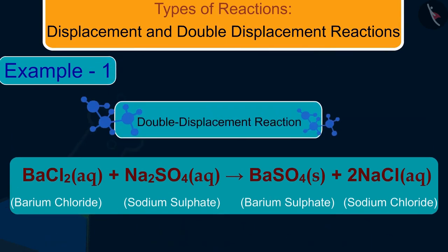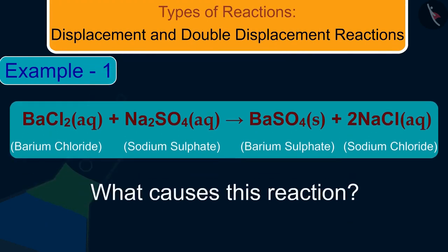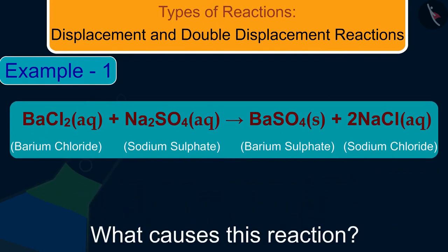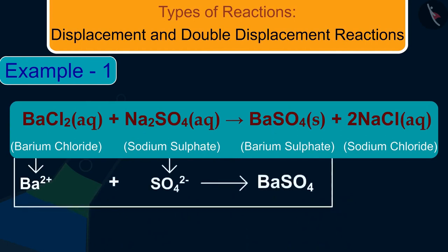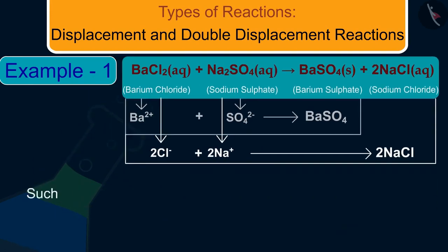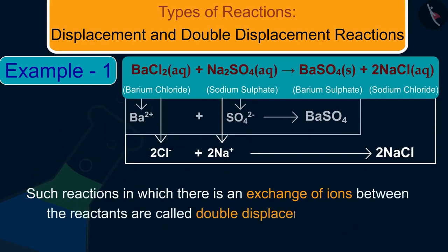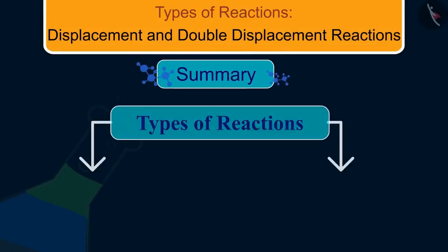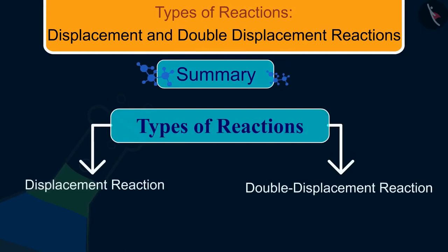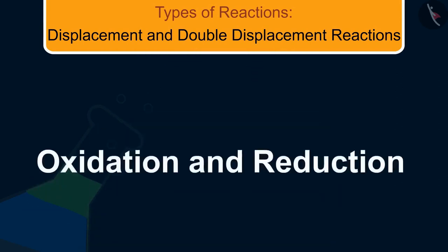Therefore, it is a double displacement reaction. The white precipitate of BaSO₄ is formed by the reaction of SO₄²⁻ and Ba²⁺. The other product formed is sodium chloride, which remains in the solution. Such reactions in which there is an exchange of ions between the reactants are called double displacement reactions. In this video, we studied displacement and double displacement reactions. In the next video, we will learn about oxidation and reduction reactions.